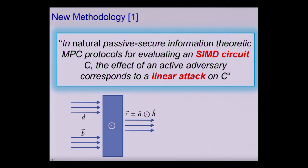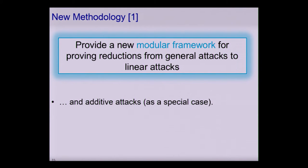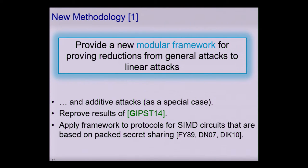What is a linear attack? For a multiplication SIMD gate that takes two input bundles and performs a pointwise product, a linear attack allows the adversary to add to the output bundle any linear function of the input bundles. The corrupted gate still computes the pointwise product but adds a linear function of A and B. Crucially, we only allow these attacks for multiplication gates and not on any other gate, but this suffices for our MPC applications. We provide a modular framework for reducing an active adversary to a linear attack on the underlying circuit.